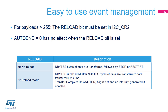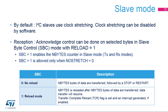When the reload bit is set, the auto-end bit has no effect. By default, the I2C slave uses clock stretching, which can be disabled by software. In receive mode, the slave acknowledge on received byte behavior can be configured when slave byte control mode is selected, together with the reload bit being set. When the SBC bit is set, the number of bytes counter is enabled in slave mode. Clock stretching must be enabled when slave byte control is enabled.